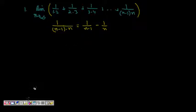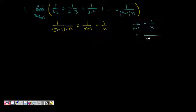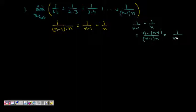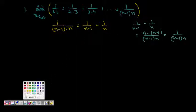You can check this: 1/(n-1) minus 1/n gives (n - (n-1)) / ((n-1)·n), which is 1/((n-1)·n). So this partial fraction decomposition is correct.